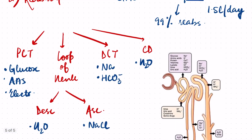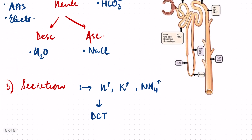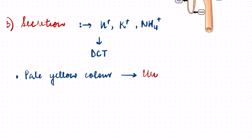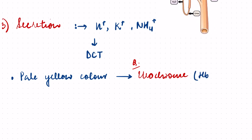So this is the mechanism of urine formation — this is how urine is formed. There is a very important concept of concentration of urine which we will talk about in the next video. Some important questions that have been asked: the pale yellow color of the urine is due to a pigment known as urochrome. This has been asked many many times — urochrome is responsible for the pale yellow color of urine.